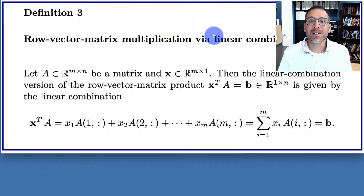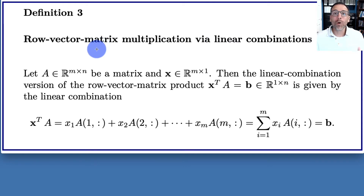Let's extend the work that we did on implementing an algorithm to do matrix column-vector multiplication via linear combinations, and adapt it to code an algorithm that does row-vector-matrix multiplication via linear combinations. As always, we're going to start with the formal mathematical definition and see how that translates into working computer code.